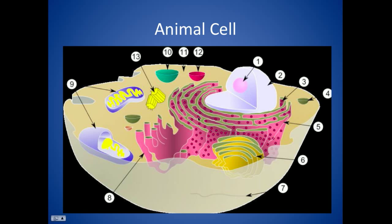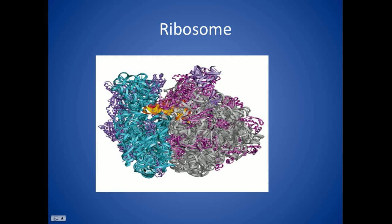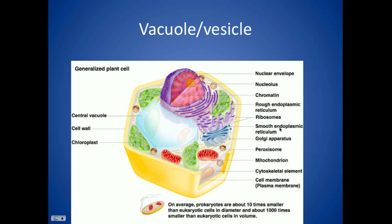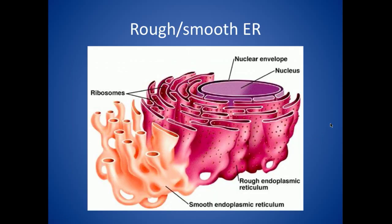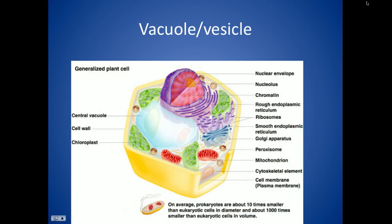The rough endoplasmic reticulum has ribosomes — this is a computer image of what they look like. Vacuole: just go ahead and disregard this slide. I'm not going to test you on this in class. This is actually a plant cell, and I don't want to confuse anyone, so just go ahead and throw that one out.